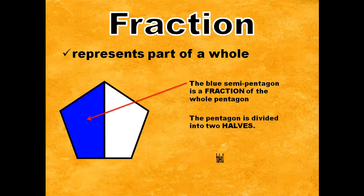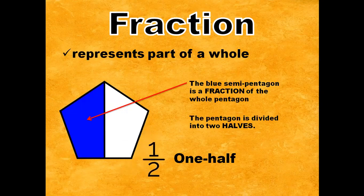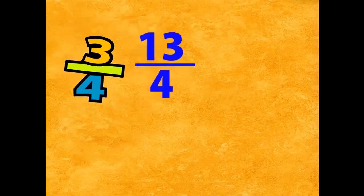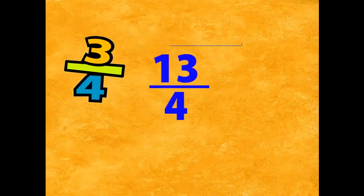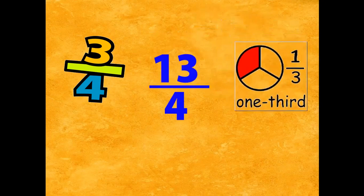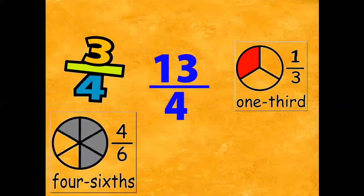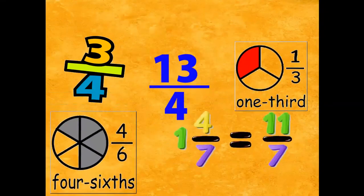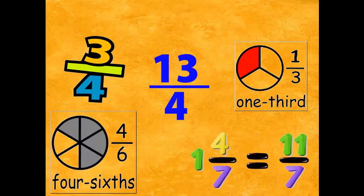The pentagon is divided into two halves, so it is one half. Three-fourths, thirteen-fourths, one-third, four-sixths, one-and-four-sevenths, or eleven-sevenths are all fractions.